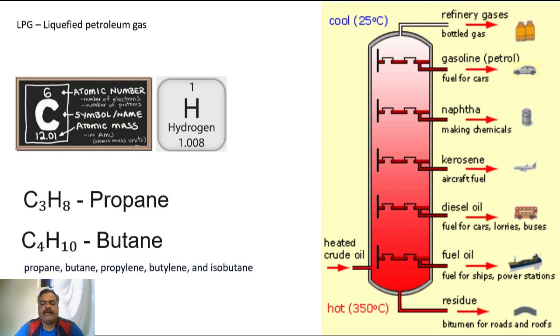If you look at the chemical formula, C3H8 is propane. So there are three carbon atoms and eight hydrogen atoms. Similarly C4H10 for butane. So this is our petroleum gas.